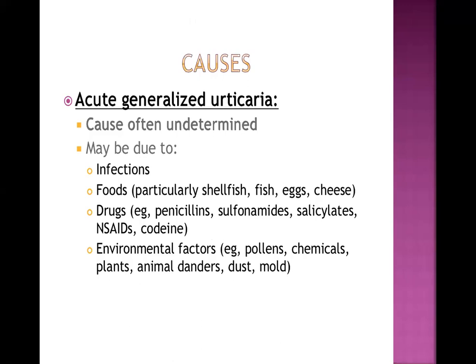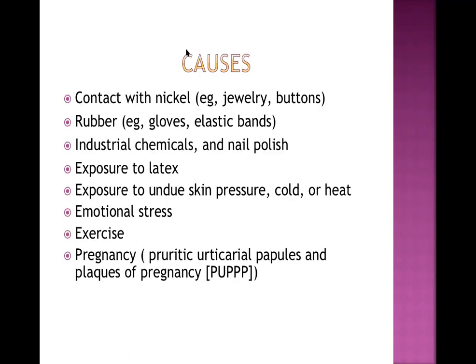Environmental factors causing urticaria include pollens, chemicals, animal dander present in homes, dust, and mold - the same antigens we studied in bronchial asthma, since both conditions share type 1 hypersensitivity pathogenesis. Contact causes include nickel from jewelry or buttons, rubber from gloves and elastic bands, industrial chemicals, nail polish, and latex particles.